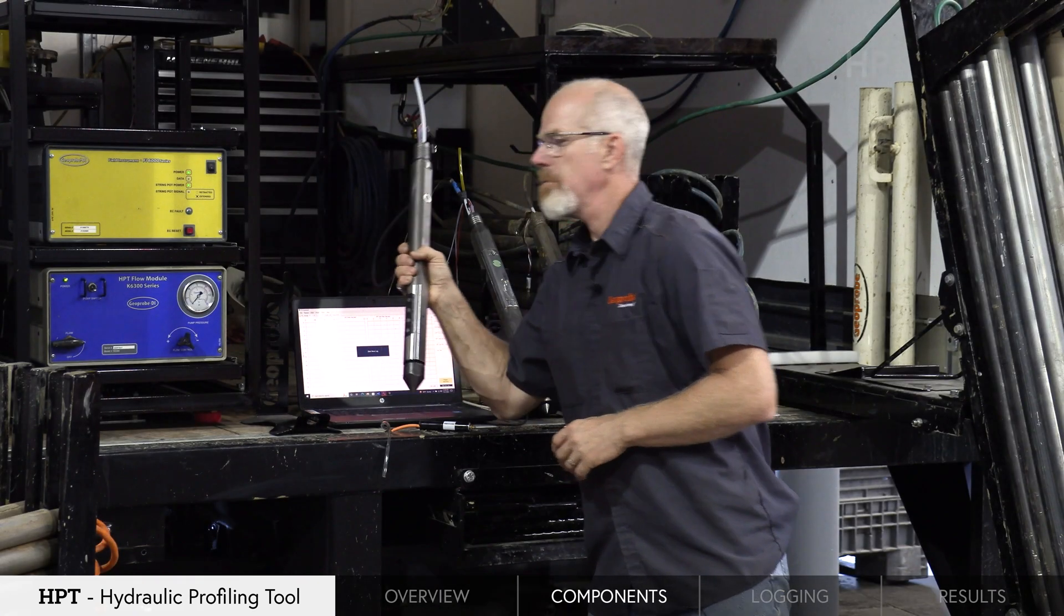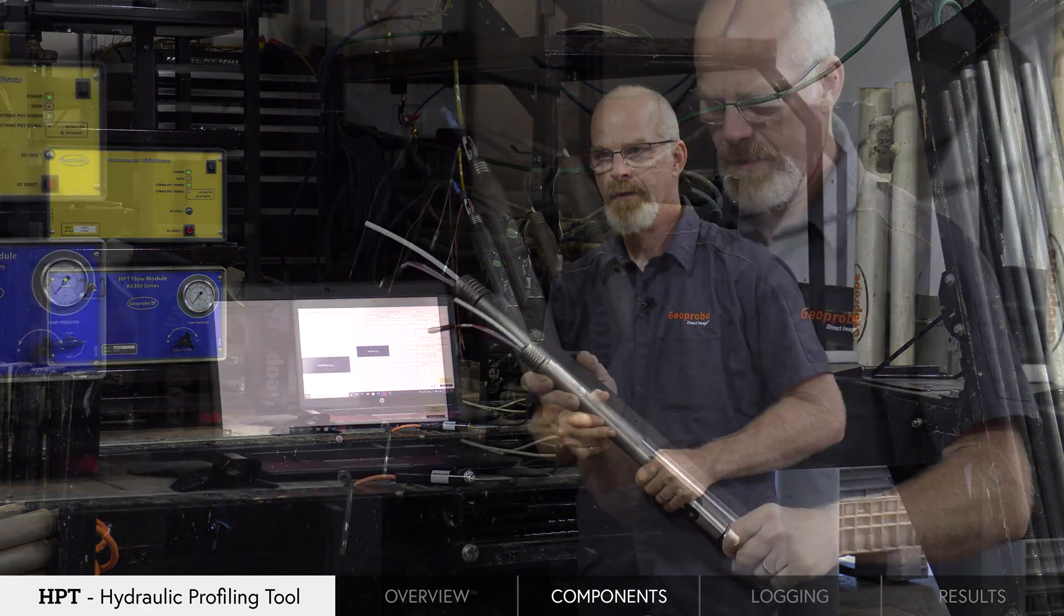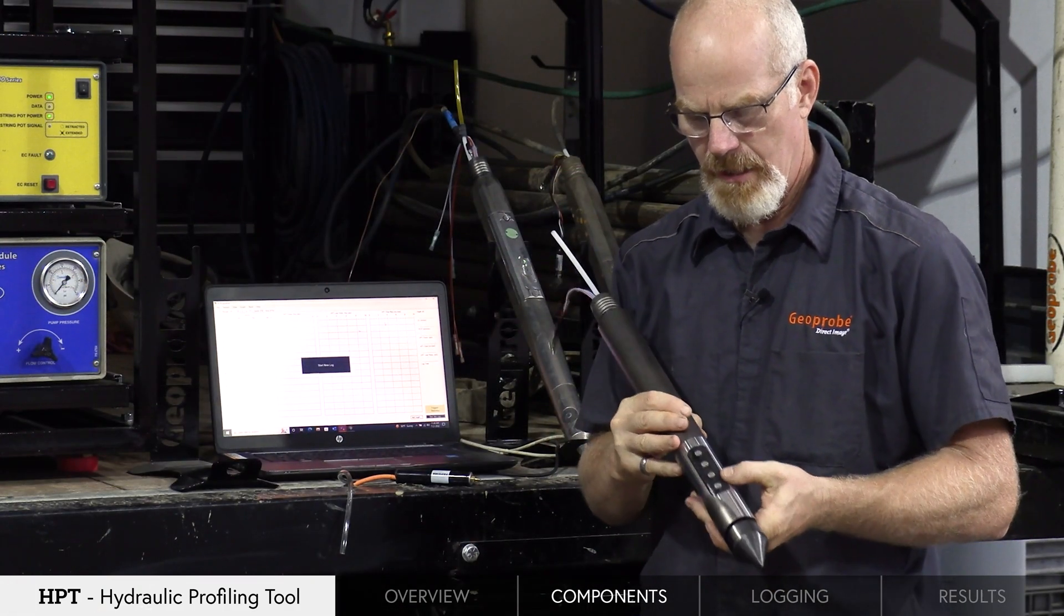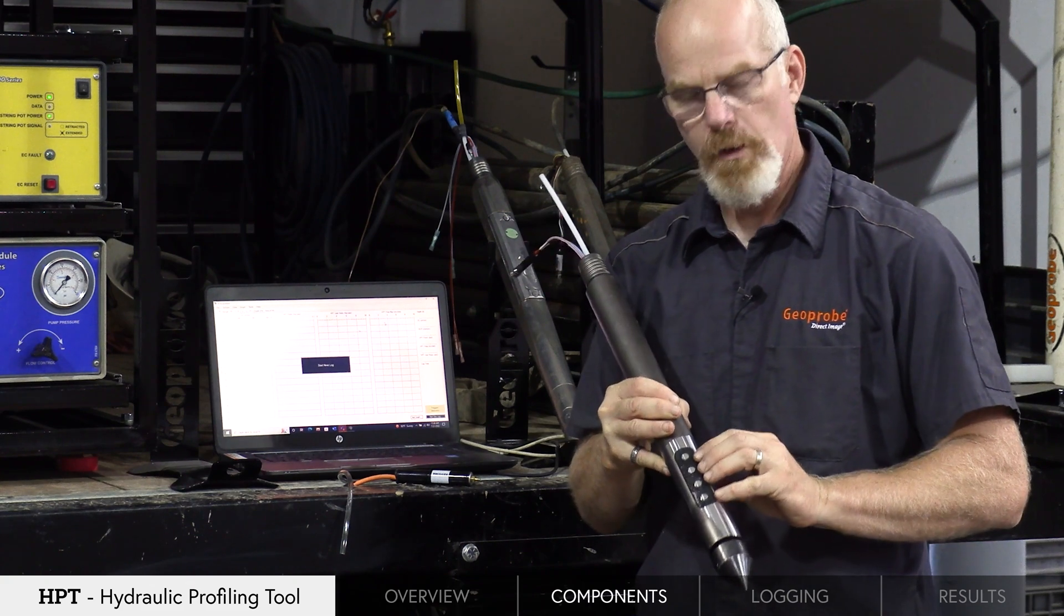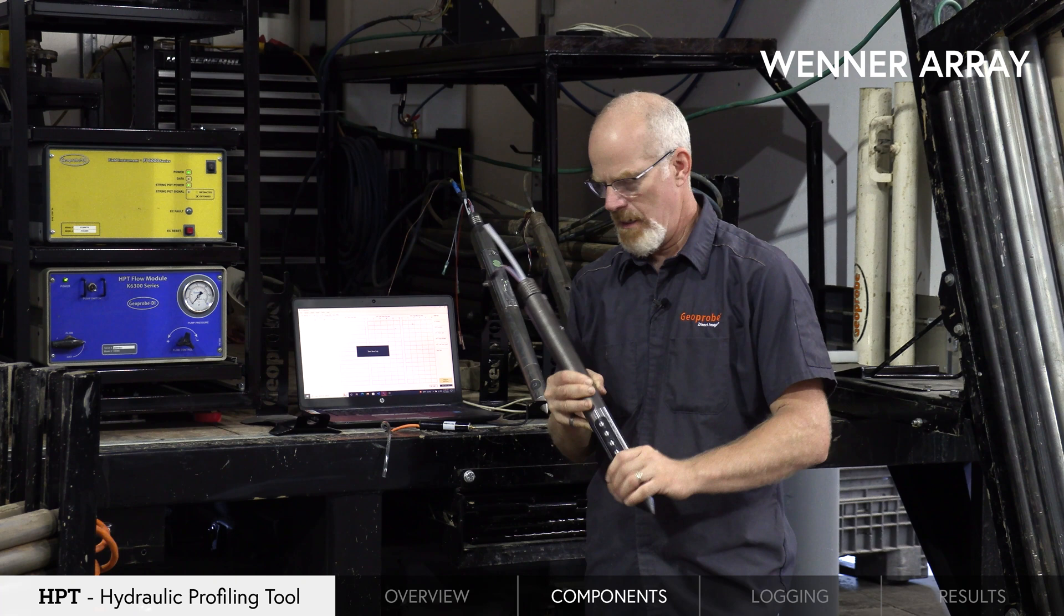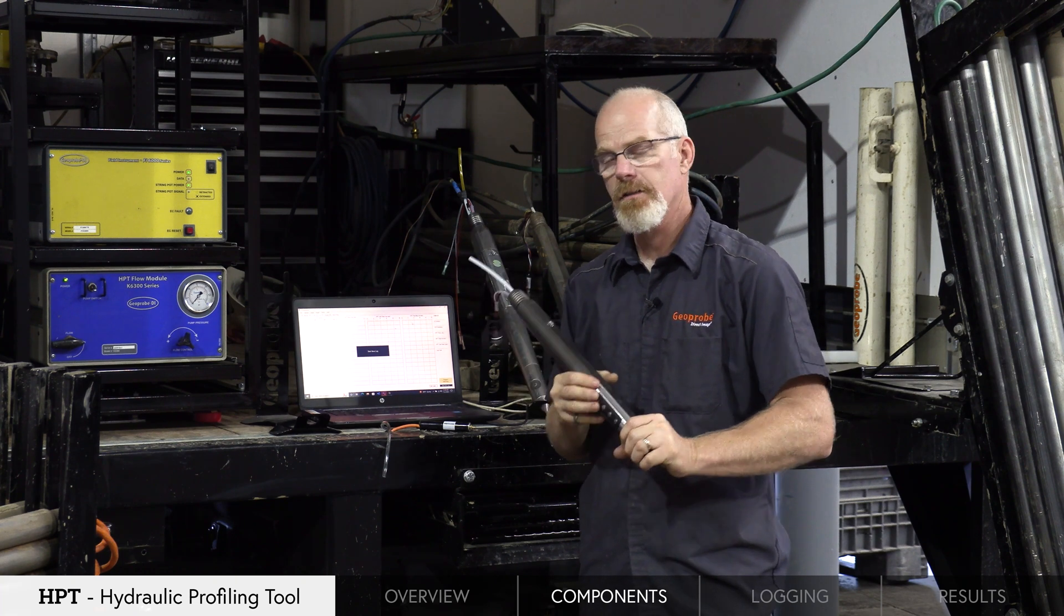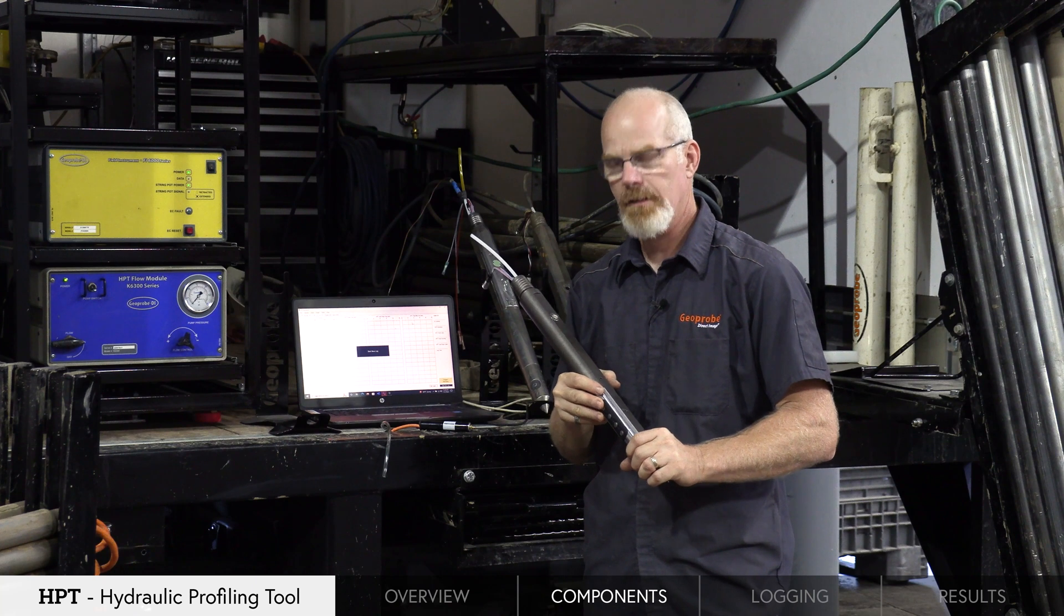The HPT probe, which is connected to the instruments via a trunk line, looks like this. We have a four-dipole electrical conductivity Wenner array for the collection of electrical conductivity for determining soil lithology.